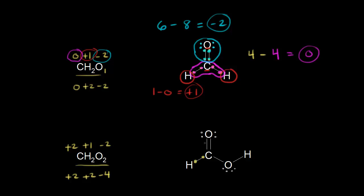Let's put in the bonding electrons and think about electronegativities. Carbon is more electronegative than hydrogen, so carbon gets the two electrons in that C–H bond. But oxygen is more electronegative than carbon, so oxygen takes the electrons in the C–O single bond, and oxygen also takes the electrons in the C=O double bond. Carbon is now surrounded by only two electrons, so four minus two gives an oxidation state of plus two — just as predicted.